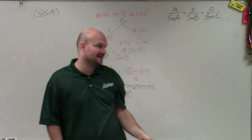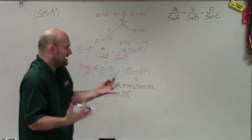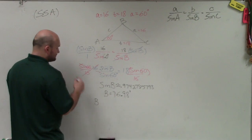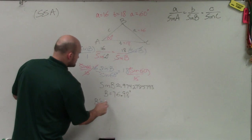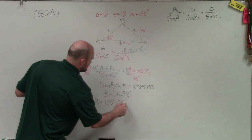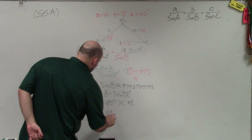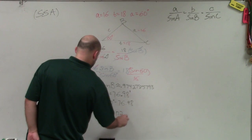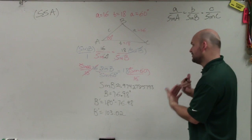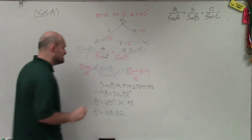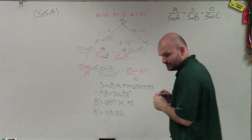Now, you know there are going to be two cases. You could look at the value of h in comparison to a, as well as a over b, to determine if there are two triangles. But the easiest thing to do is solve for B and then check B prime. For side-side-angle, you always want to check for the supplementary angle. So I take 180 degrees and subtract 76.98, giving me B prime equal to 103.02 degrees.